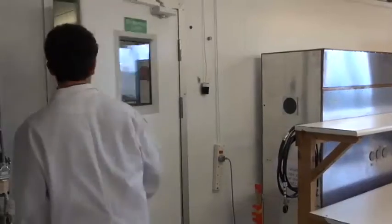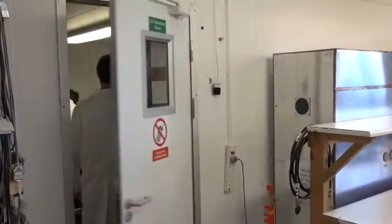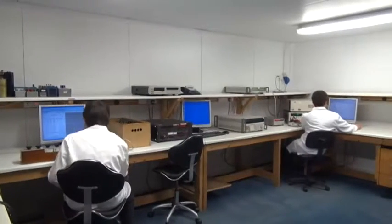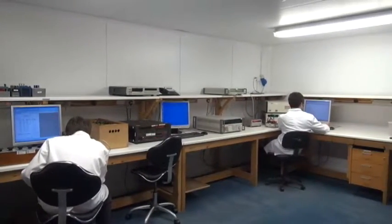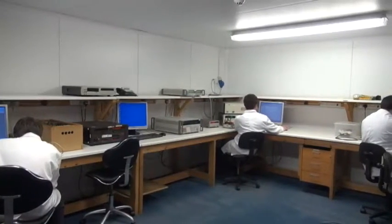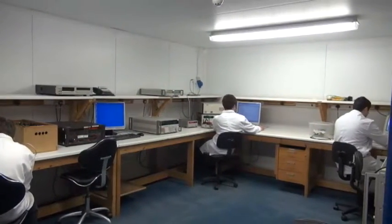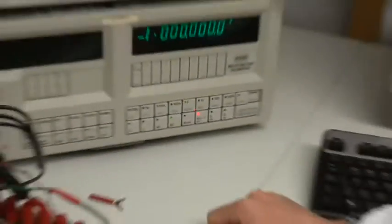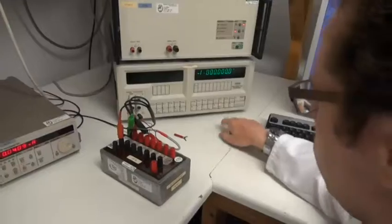We have a specialist direct current and low frequency or DCLF standards room which is temperature and humidity controlled. The more precise equipment is calibrated in here from DC up to around 100 kilohertz AC. The measurements made in our DCLF standards room have uncertainties of parts per million and are highly precise.